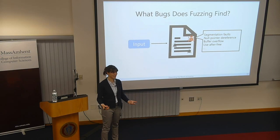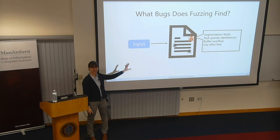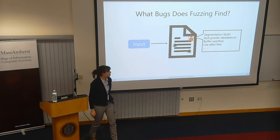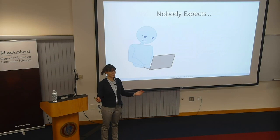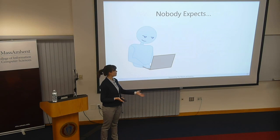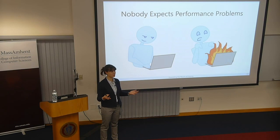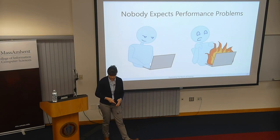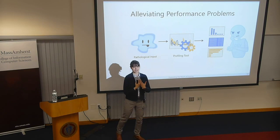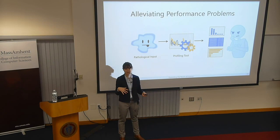Before talking about finding different types of bugs with fuzzing, let's talk about what it does find. It finds things that cause your program to crash spectacularly — in C and C++ programs, things like segmentation faults, null pointer references, buffer overflows, use-after-frees — all these memory management issues. But this is not the only thing that can go wrong. Your user might find some pathological input that causes the runtime or memory usage to explode — performance problems that arrive really unexpectedly.